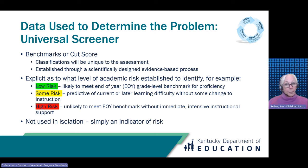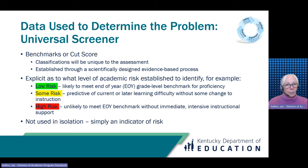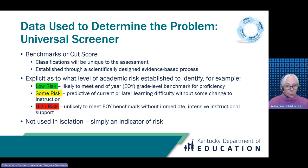These scores are typically assigned a risk level based on research conducted by the test developer. Low risk means the student is likely to meet end-of-the-year grade level benchmarks. Some risk is predictive of current or later learning difficulty without some change to instruction. High risk means the student is unlikely to meet end-of-the-year benchmark without immediate intensive instructional support. It's important to note that universal screening data is simply used as an indicator of students at risk for not meeting proficiency, but it's not used in isolation.